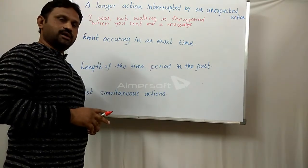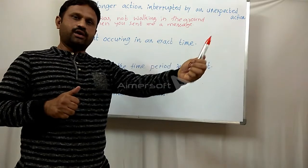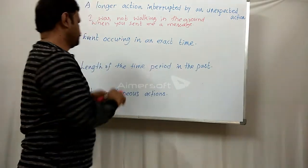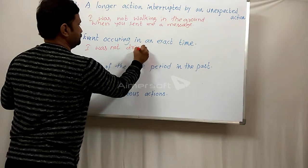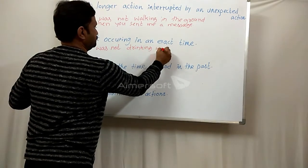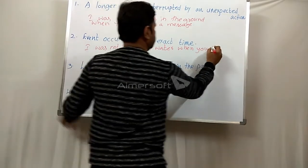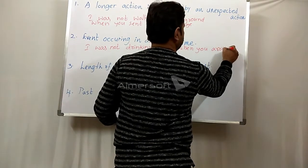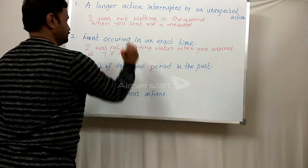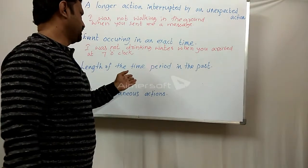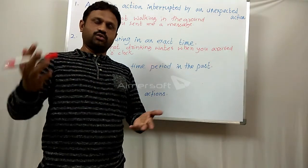The second case is an event occurring at an exact time. For example: 'I was not drinking water when you arrived at seven o'clock.' The third case is a length of time period in the past. For example: 'I was not working in this school last summer.'